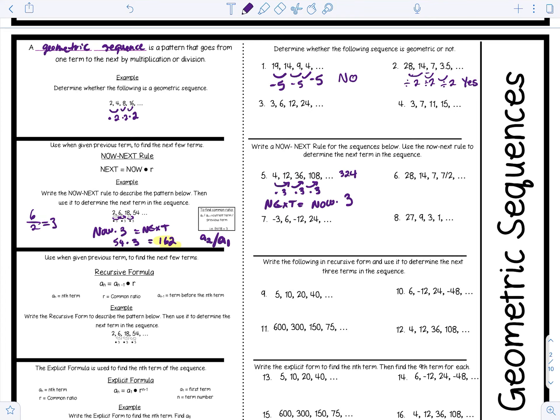Then we have 28, 14, 7, 3.5 — same as in the previous column. Here we write: Next = Now ÷ 2, or equivalently, Now multiplied by one-half. Now you try numbers 7 and 8.